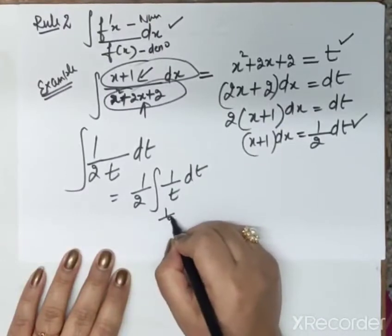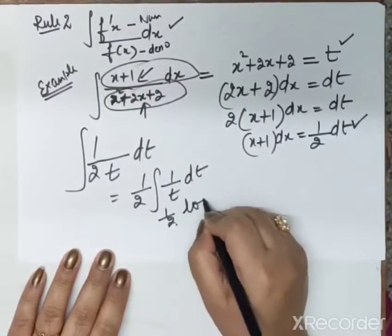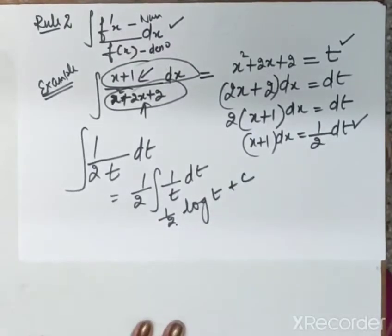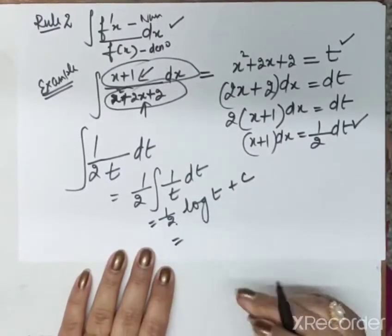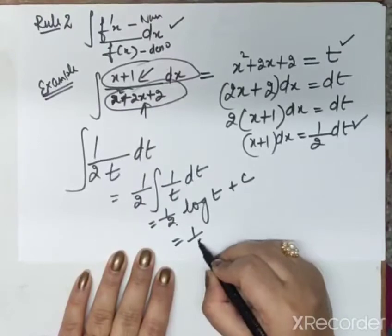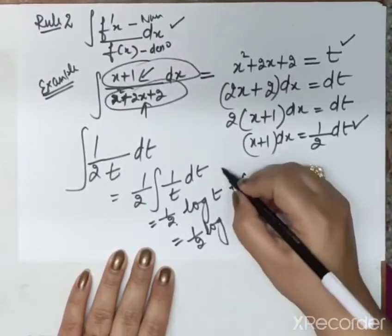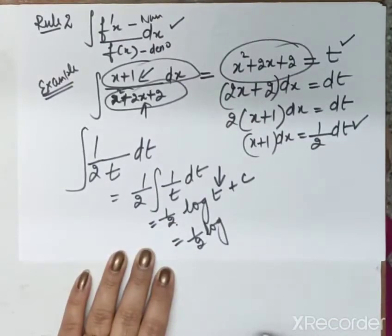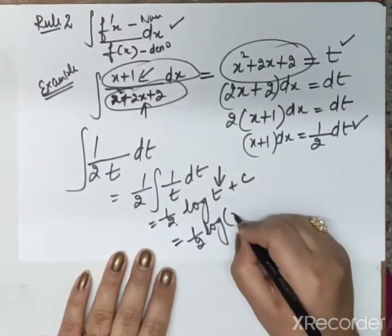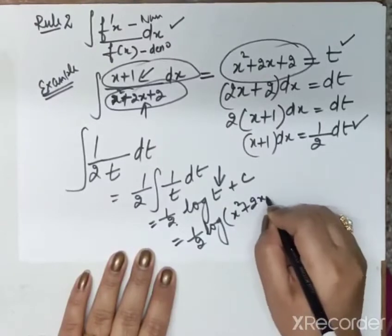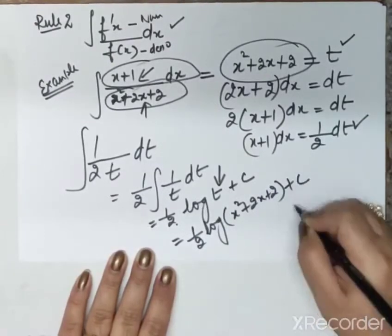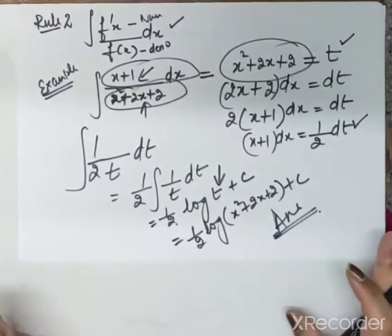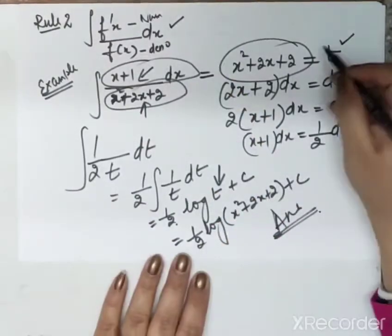So this becomes (1/2) · ∫(1/t) dt. This gives (1/2) log(t) + c. Now we substitute back the value of t, which is x² + 2x + 2. So the answer becomes (1/2) log(x² + 2x + 2) + c.